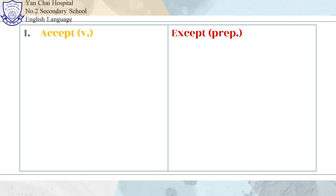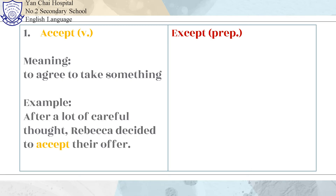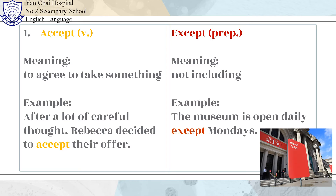Number 1: Accept and Except. Accept means to agree to take something. Example: After a lot of careful thought, Rebecca decided to accept their offer. Except means not including. Example: The museum is open daily except Mondays.